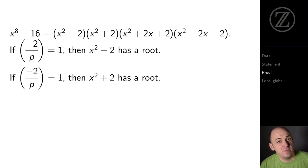If (-2/p) = 1, that means there's a square root of minus 2 in Z mod p, and I can find a root of the polynomial x squared plus 2, and then again, we're done.